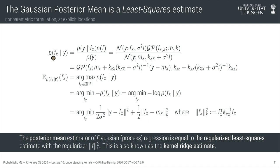Let's talk specifically about the posterior over function values at some location x, given data y. This posterior distribution is given by Bayes' theorem: the prior times the likelihood divided by the evidence. We've chosen a Gaussian process prior, a Gaussian likelihood connecting to function values evaluated at training locations capital X, and the evidence can be computed by evaluating the PDF of a Gaussian.